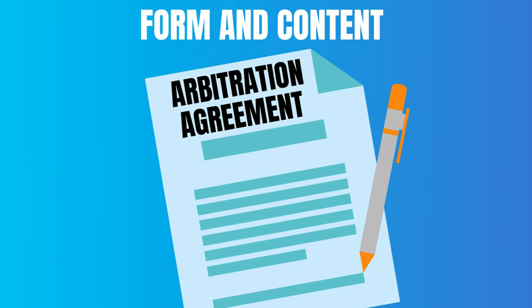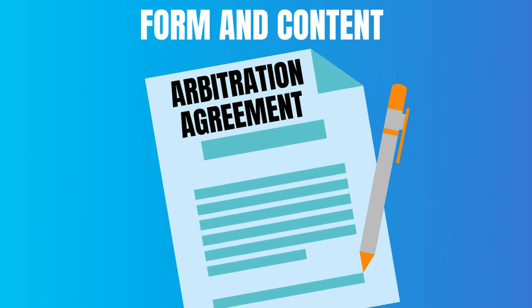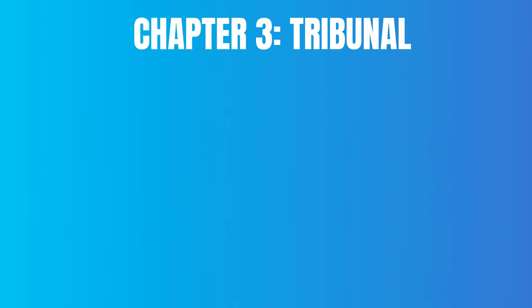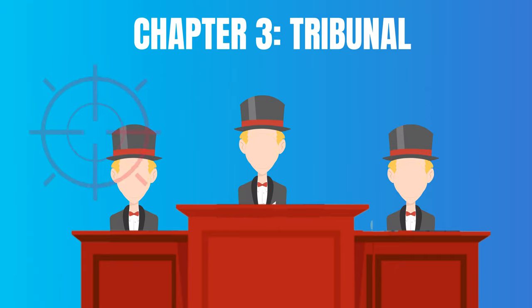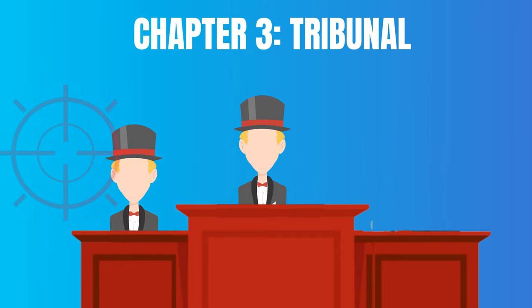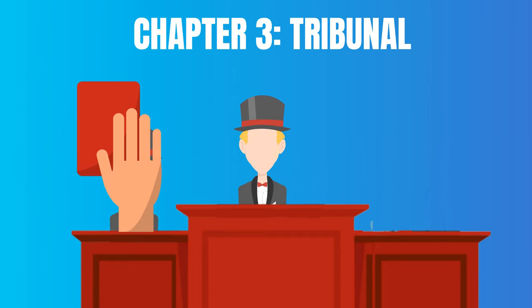Chapter 2 discusses the arbitration agreement in terms of its form and content. Chapter 3 describes the composition of the arbitral tribunal, like the number of arbitrators, their appointment, how to replace or terminate one, and when it is possible to challenge his mandate.